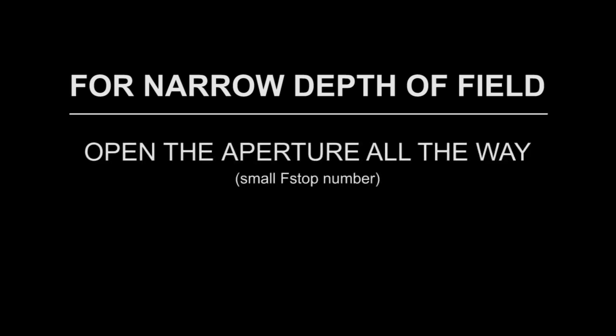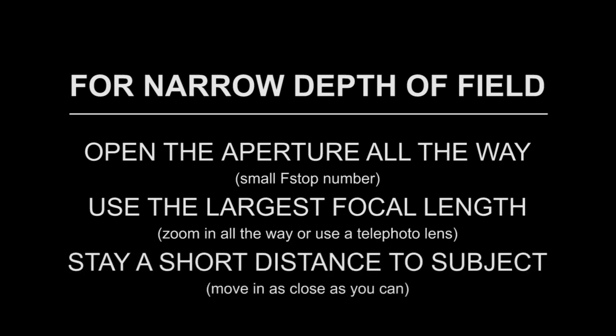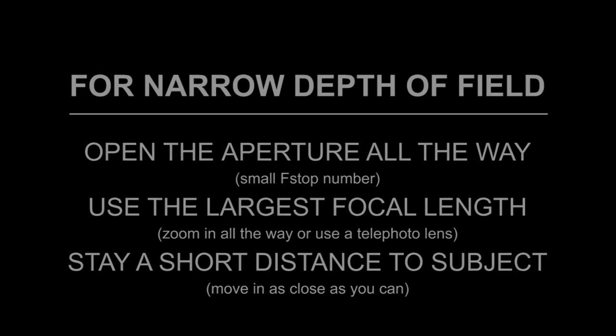So, if you want to get a narrow depth of field, then the three factors I mentioned before should be as follows. The aperture should be open as wide as possible. You should use the largest focal length of your lens — so if you have a zoom lens, then you should zoom in. Or if you're using different prime lenses on your SLR, then you should use the one with the biggest number that you have, like a 200 or 300 millimeter telephoto lens. And finally, you should be as close to the subject as possible. Those are the three things you need in order to get a very narrow depth of field.